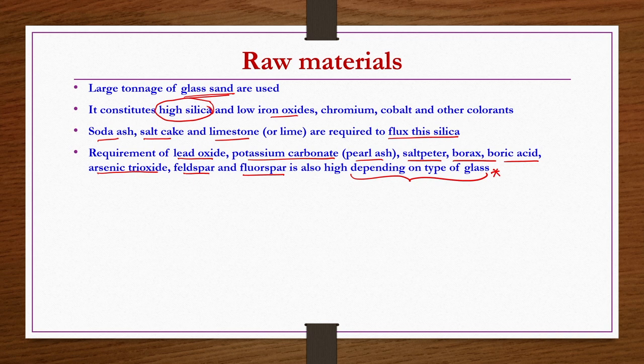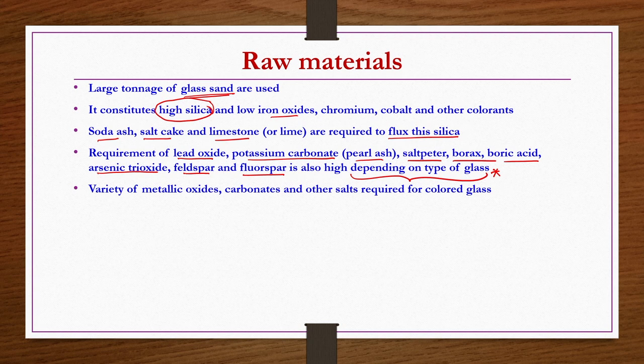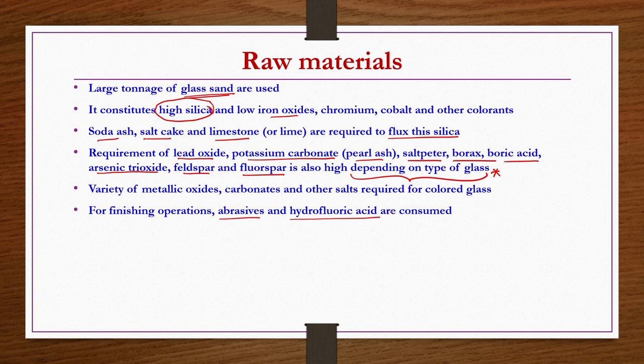We now see the sources of these ingredients — whether major or minor — and the purpose for which they have been incorporated in making glass. Variety of metal oxides, carbonates, and other salts are required for colored glasses. For finishing operations, abrasives and hydrofluoric acid are also consumed.